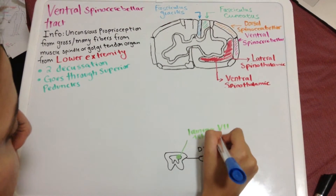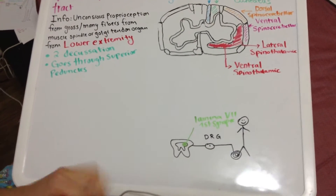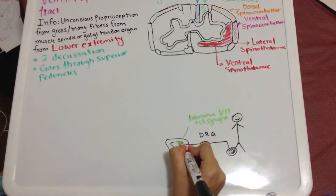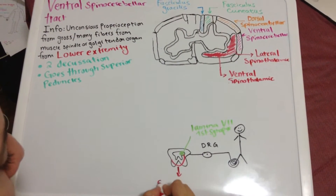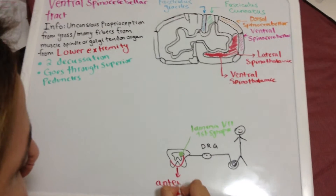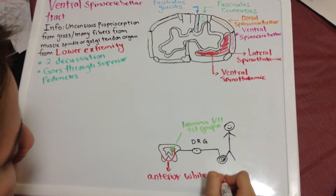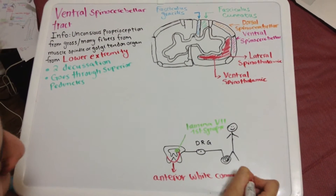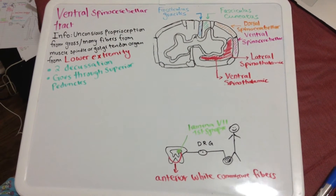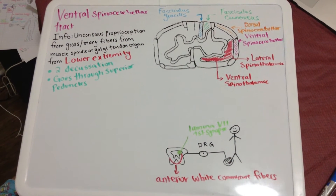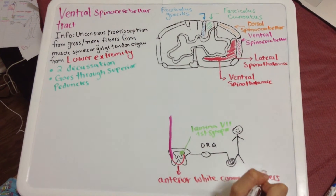Inside the spinal cord, the tract synapses at lamina 7 — this is the first synapse. Right after this synapse, the fibers decussate via the anterior white commissure, making the first decussation.